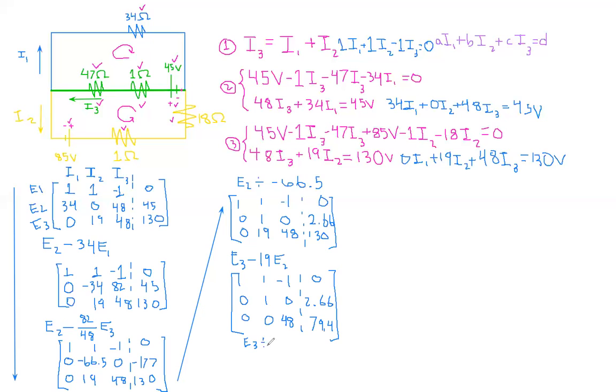Now, just like before, we divide E3 by 48. You can see there's kind of like a pattern here. Once you do it a couple times, it's not so crazy looking. I feel like matrices look crazy looking at first, and then you're like, oh no, it's just a box with numbers in it. So now we have 0, 0, and this works out to be 1.65.